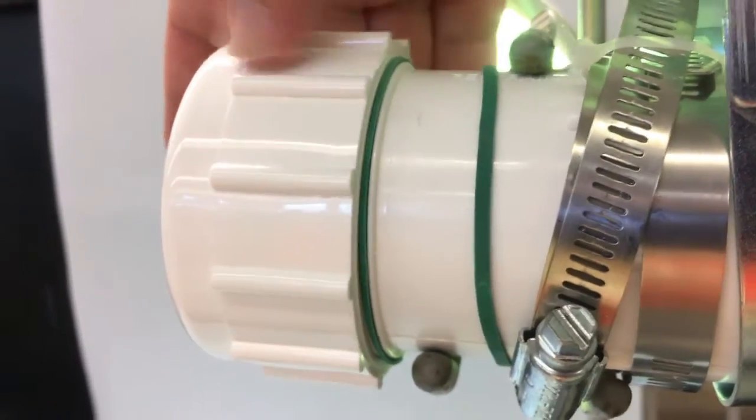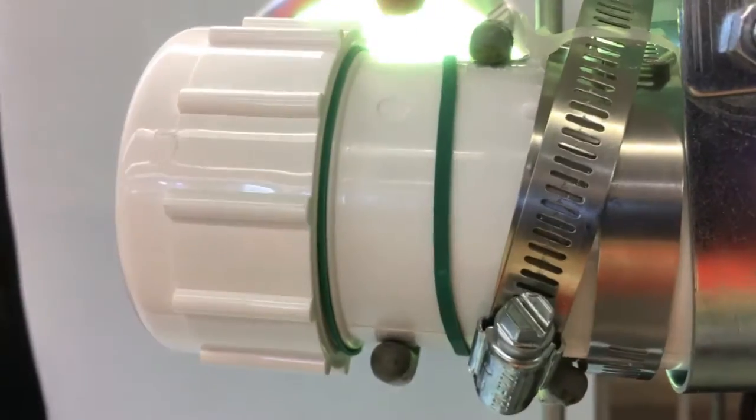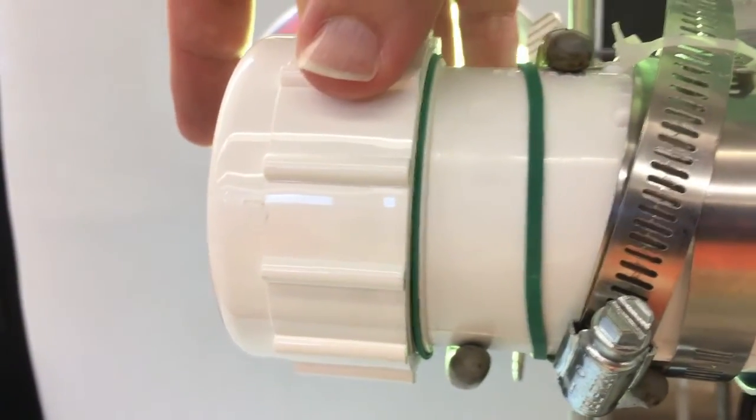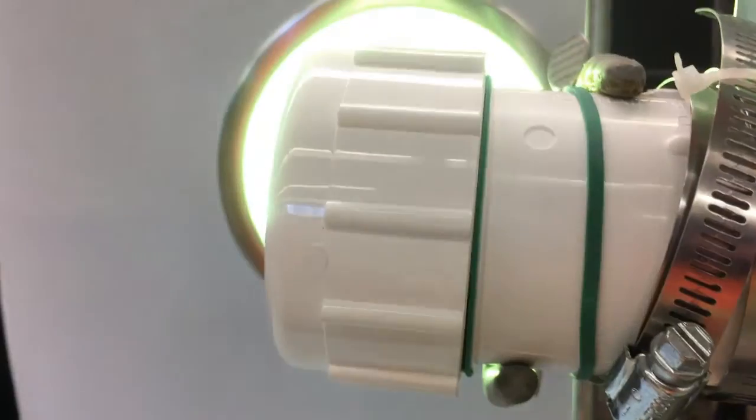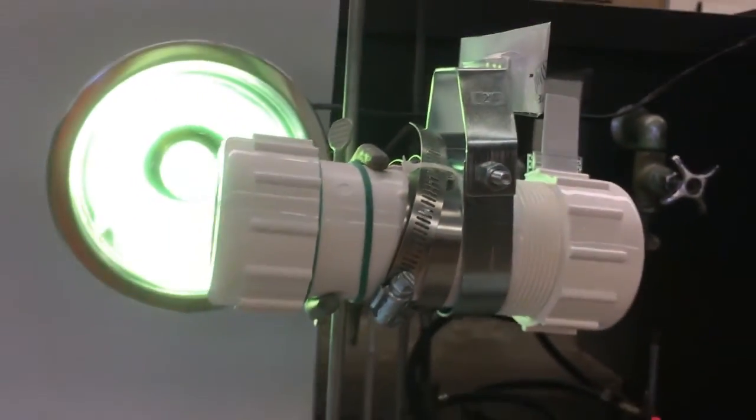When you're calibrating, try and get it so that the rubber band is just up against the edge of the lens there, and as you adjust, there's some tension. That way the tension will stop it from rattling around.